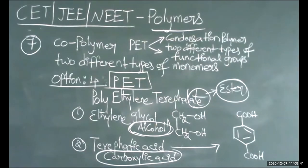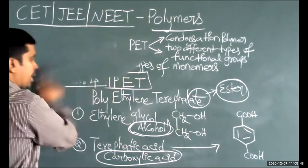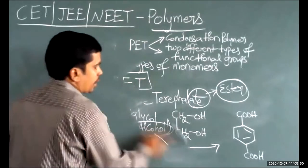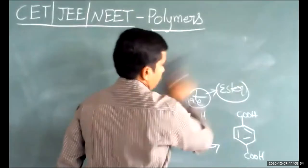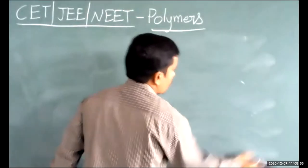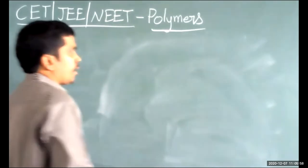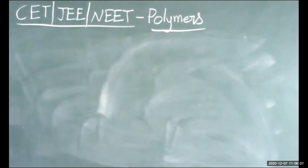Very important: remember that PET is an example of both a copolymer and a condensation polymer. It contains two types of functional groups — one monomer with an alcohol group and the second with a carboxylic acid group. That completes question number 7.